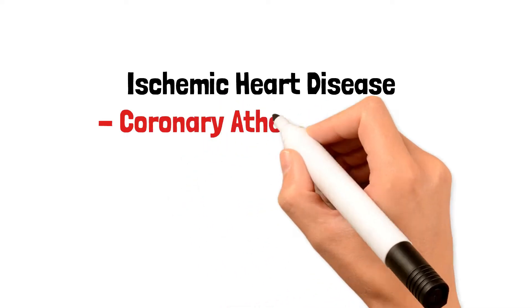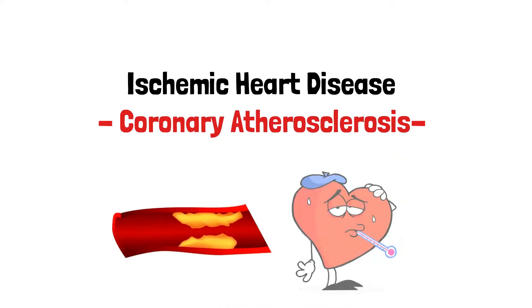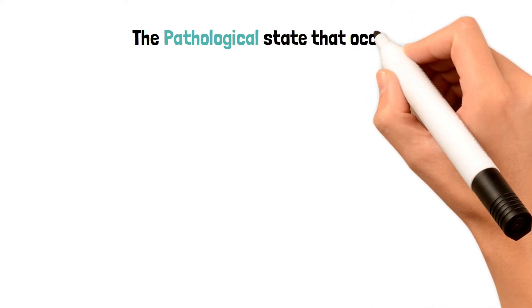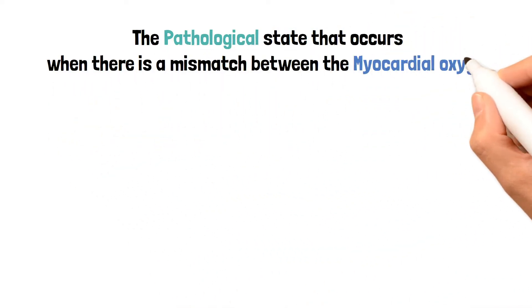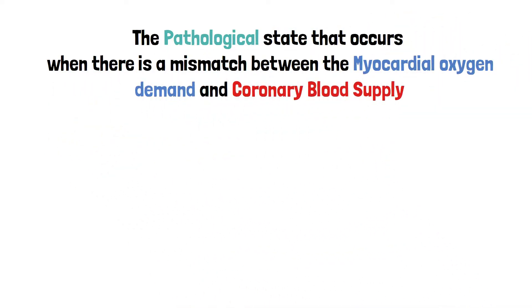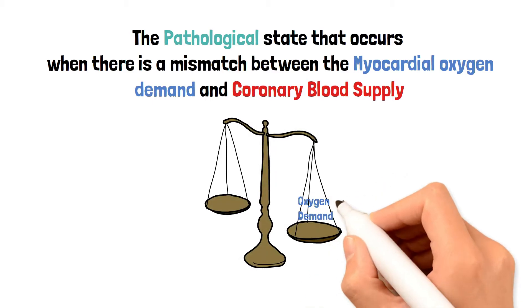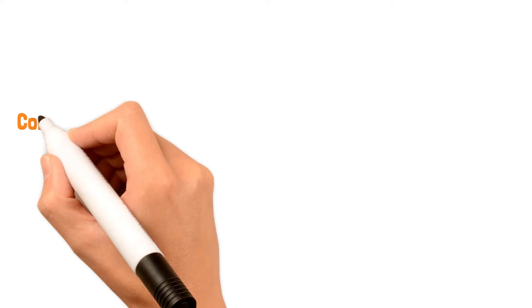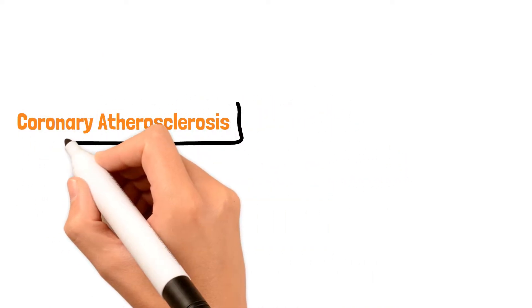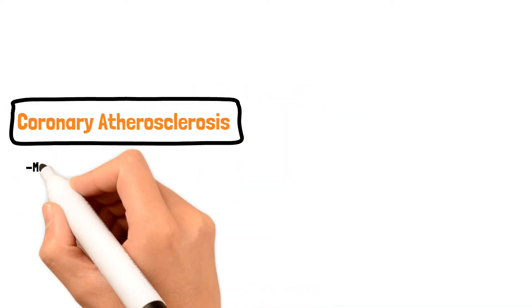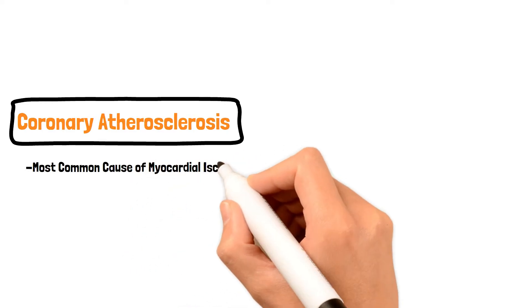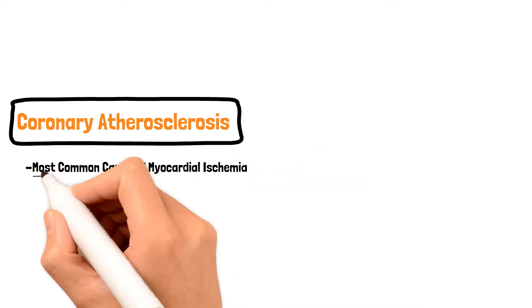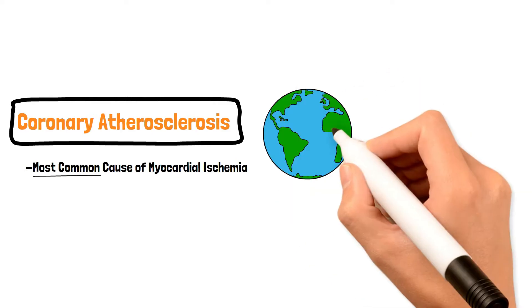In this video, we will be introducing ischemic heart disease and coronary atherosclerosis. The pathological state that occurs when there's a mismatch between the myocardial oxygen demand and coronary blood supply is known as ischemic heart disease. Coronary atherosclerosis in one or more coronary arteries is the most common cause of myocardial ischemia in most parts of the world.